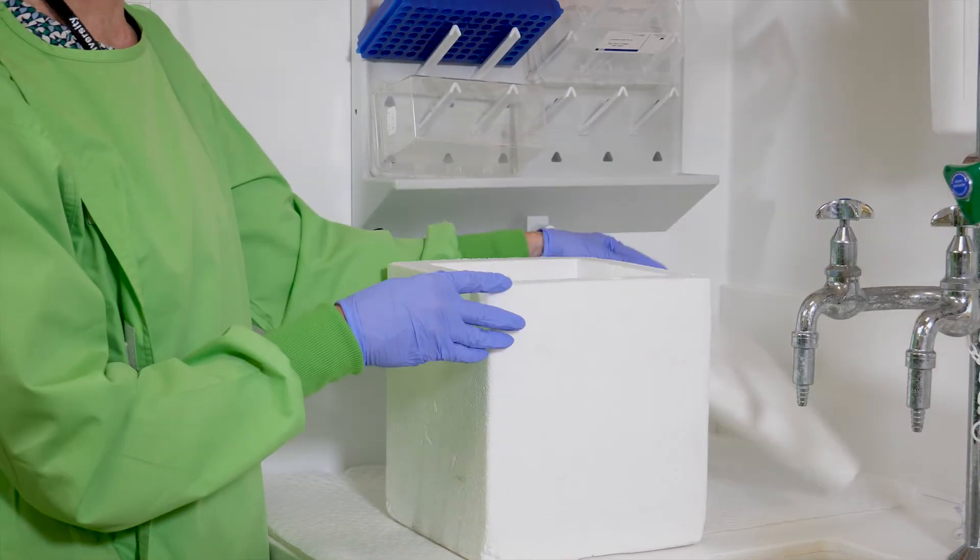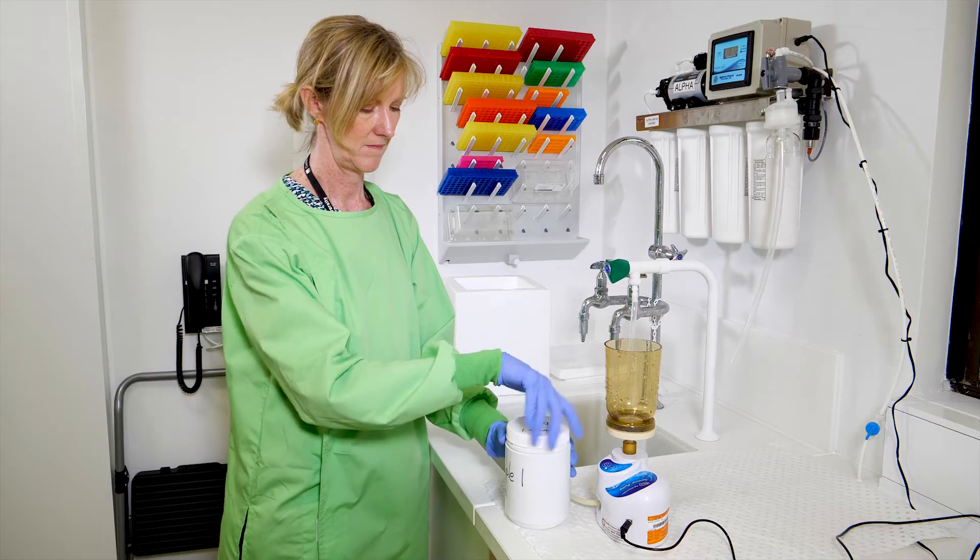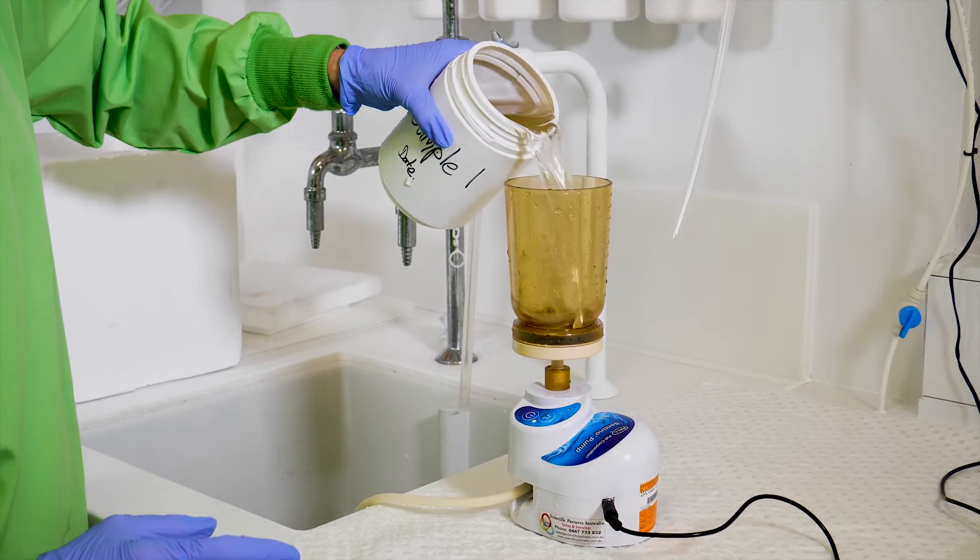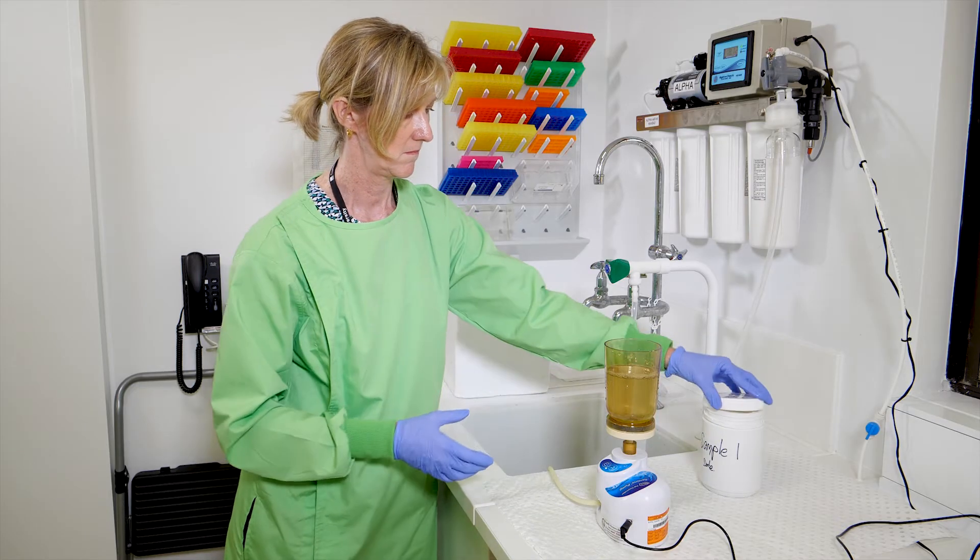Now that your pump is ready, take your first water sample to be filtered from the cold storage. Remove the lid and pour the liquid into the funnel to approximately three quarters full. Replace the sample lid and turn the pump on.